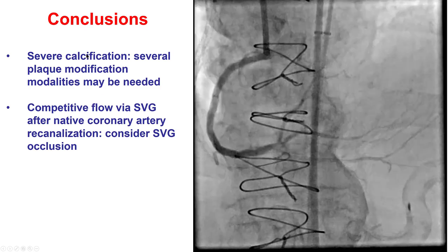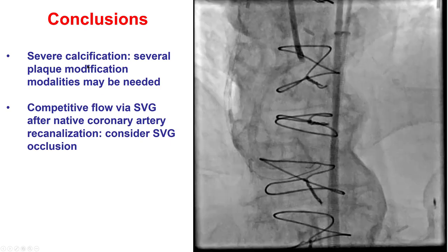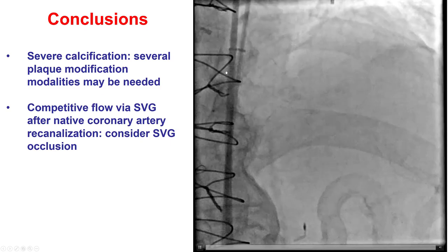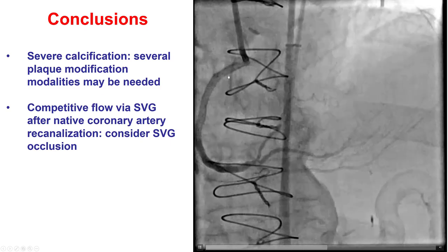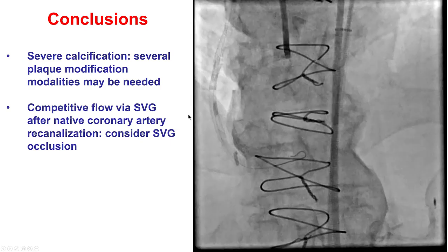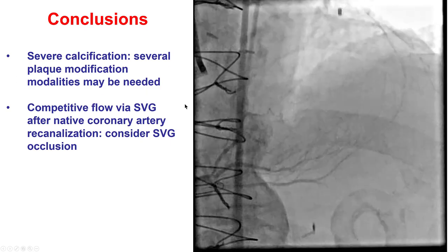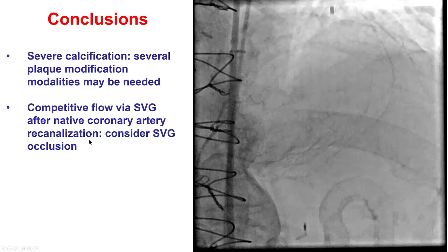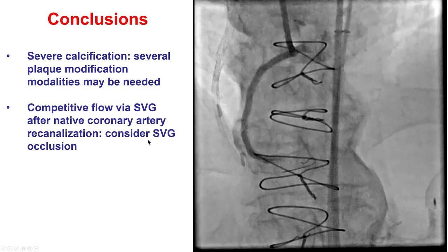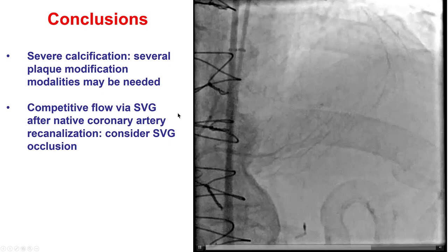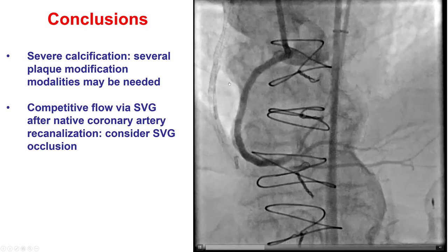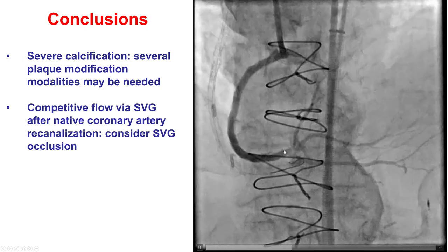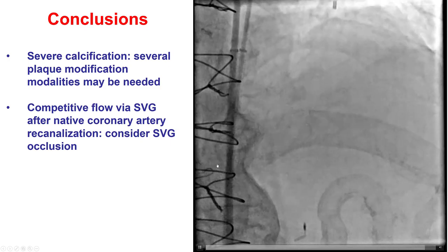Lessons from this case: First, before placing stents in severely calcified lesions, one needs to make absolutely certain that the lesion is well expanded. In this case, orbital atherectomy did not result in full expansion of the mid-right coronary artery, but using intravascular lithotripsy, we were able to get good expansion with the balloons and stents. Second, when there is competitive flow through a saphenous vein graft after re-canalizing a native coronary CTO, occluding the SVG with coils or with Amplatzer vascular plugs might reduce the risk of stent thrombosis in the recently stented vessel.